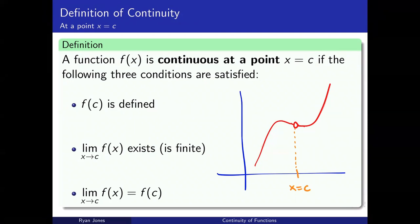The second condition is that the limit as x approaches c has to exist — meaning it's anything other than infinity, negative infinity, or does not exist. If you get a finite number, that's good. In this case with the hole I drew, while the function is not defined at x equals c, the limit does still exist. As x approaches c from both the left and the right, I get the same y value, so the limit exists.